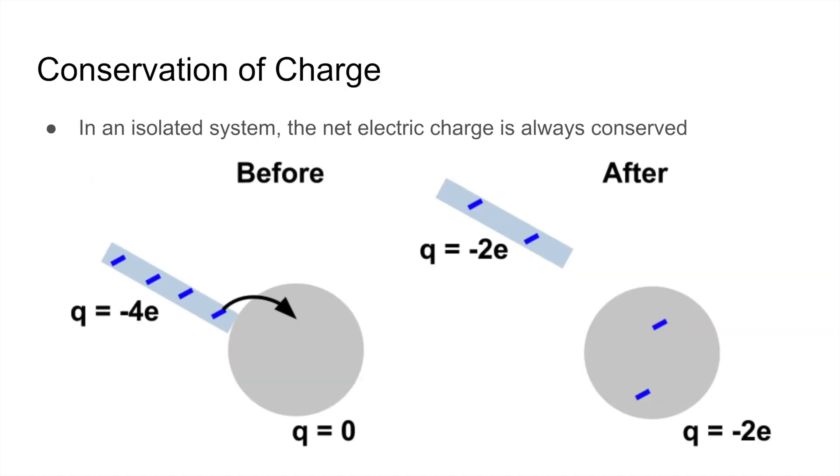The last concept that we want to know is the conservation of charge. So in an isolated system, which means that no net charge flows in or out, the net electric charge is always conserved. And you can see this example right here.